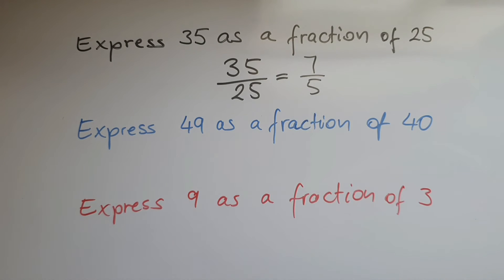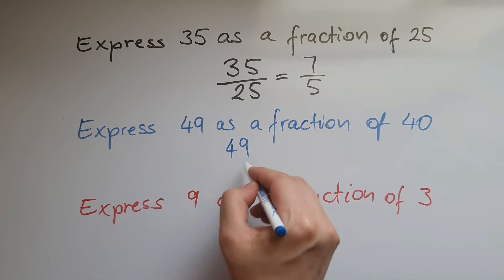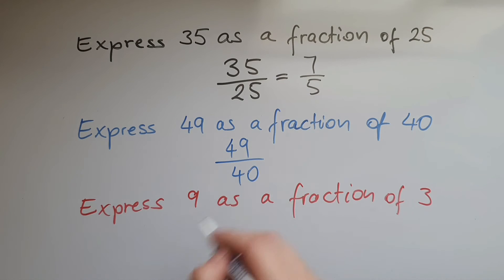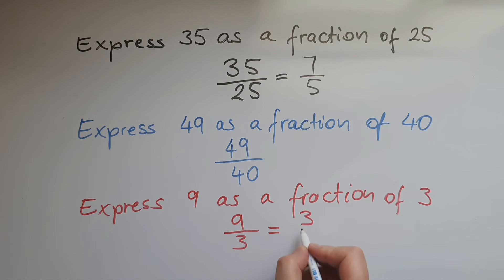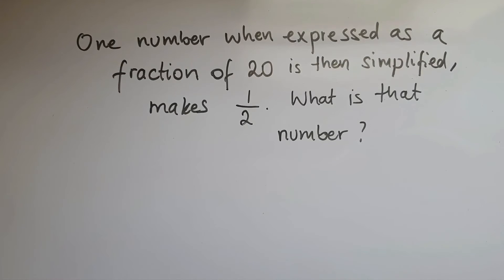Now we've got to express 49 as a fraction of 40. So 49 over 40. Can we go any further? No, we can't, so we're going to leave it like that. Now we've got to express 9 as a fraction of 3, so that is 9/3. And we can simplify this further by dividing both numbers by 3, so 3/1 would be the answer.